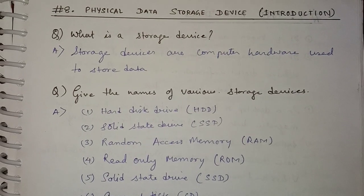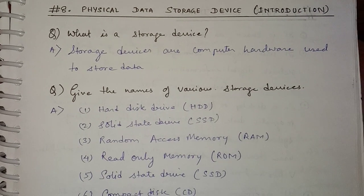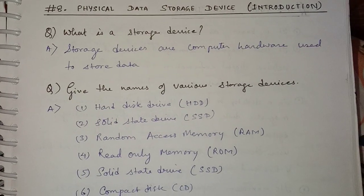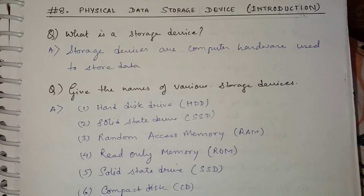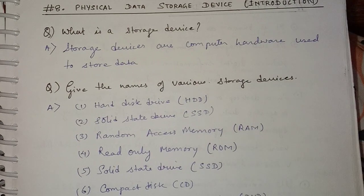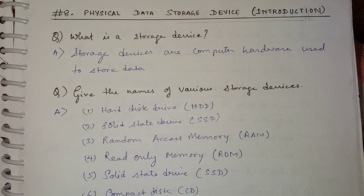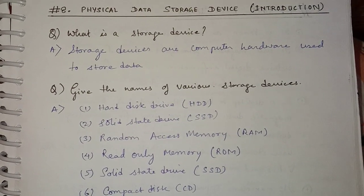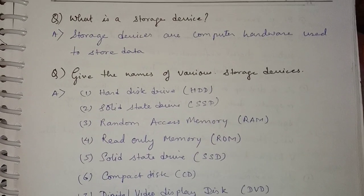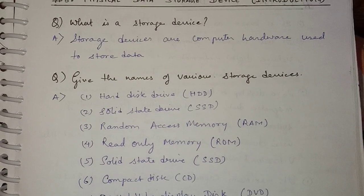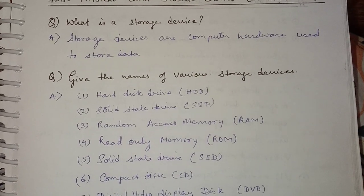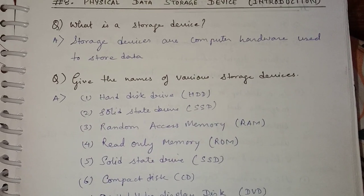What exactly is data? I want to tell you about how data is stored in a physical storage device. Let us first start with: what is a storage device? A storage device is computer hardware that is used to store data.